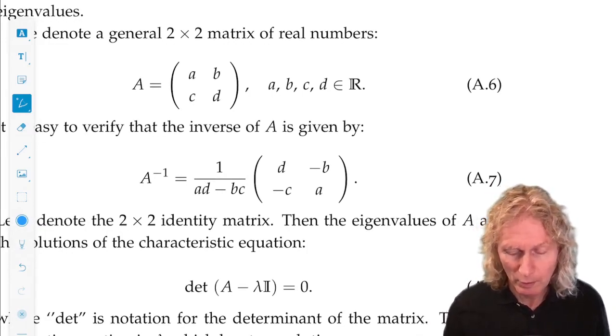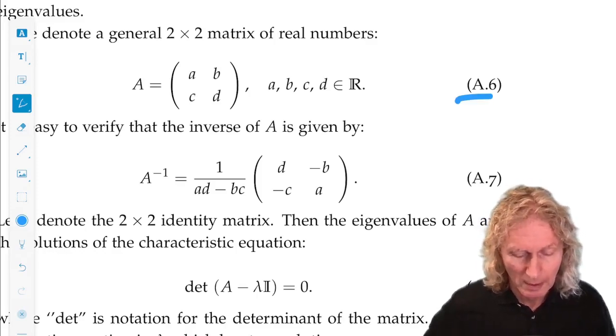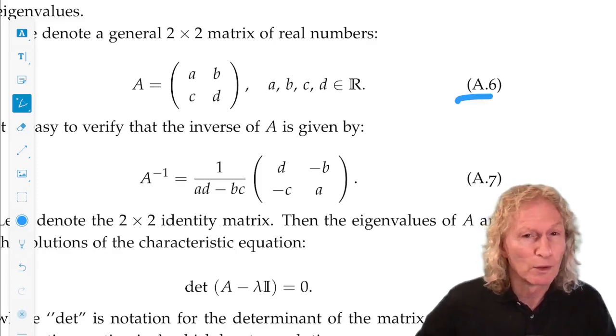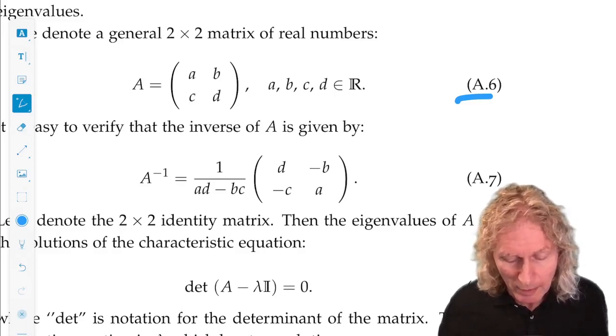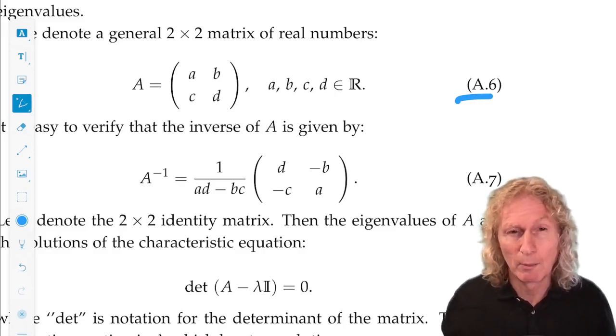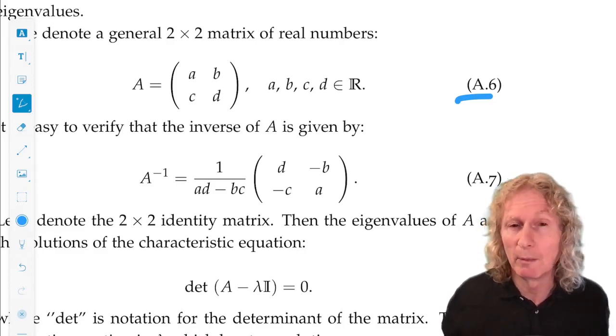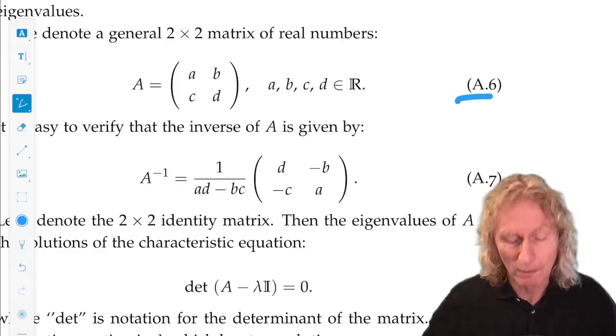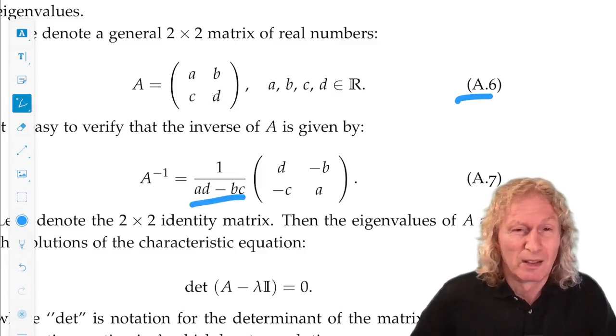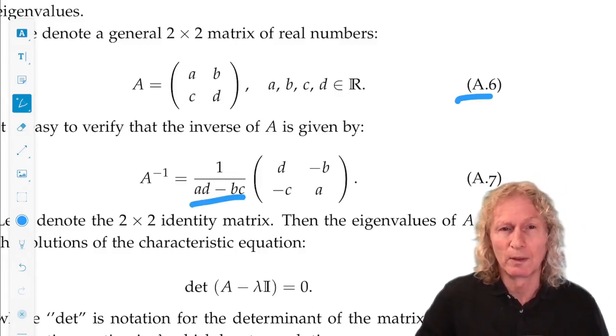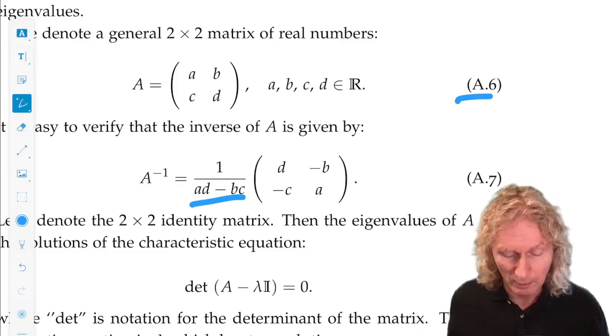So consider this general matrix A6, ABCD, the inverse. Well, we know how to do that. We leave the off diagonal elements alone, but we put a minus sign in front of them, and we swap the diagonal elements and divide by the determinant. So that tells you immediately that the inverse does not exist unless the determinant is non-zero.